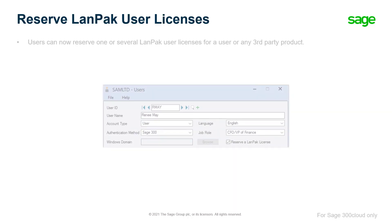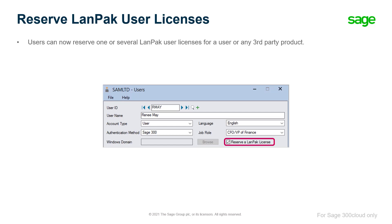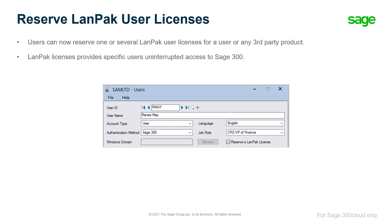Users can now reserve one or several Landpack user licenses for a user or any third-party product. Landpack licenses provide specific users uninterrupted access to Sage 300. Please refer to the reserve Landpack licenses video for more information on this new feature.